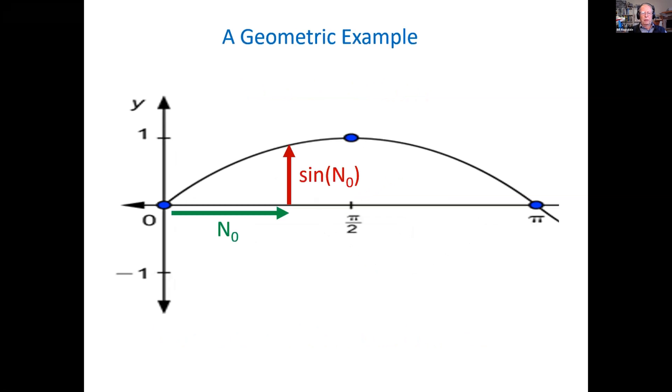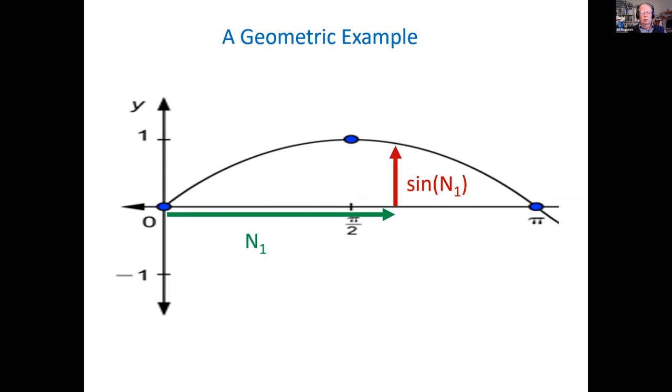So let's look at a geometric example. If we start out with an n0 of 1, the sine of n0 is about 0.84. So we take our n0 and the deviation, add them together to get n1. Now for n1, at about 1.84, the sine of n1 is about 0.9. Add those together.